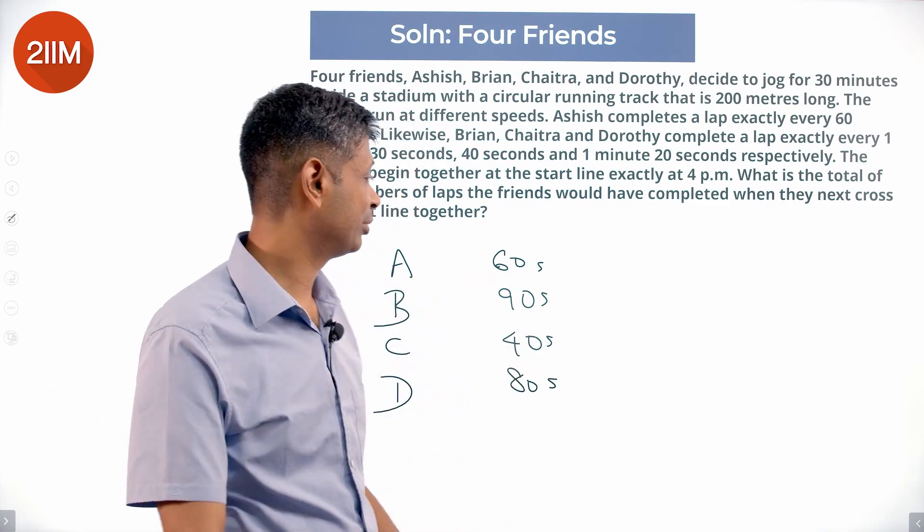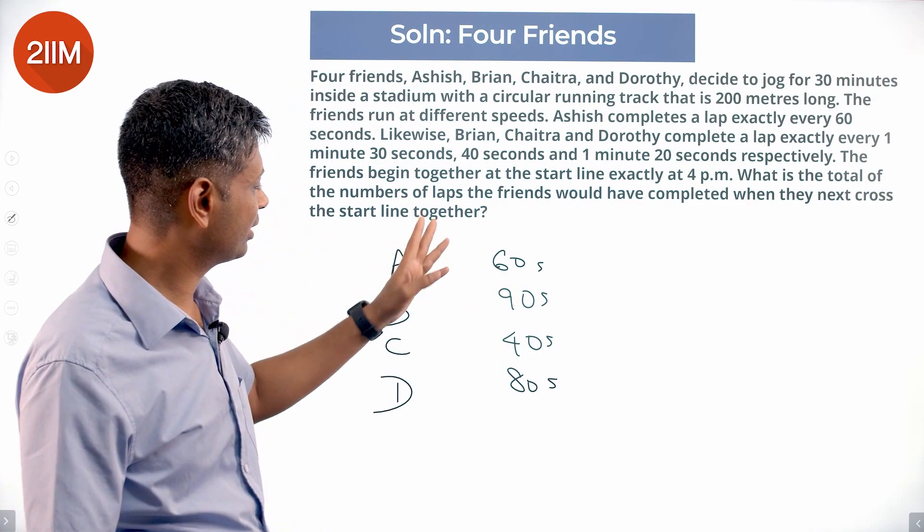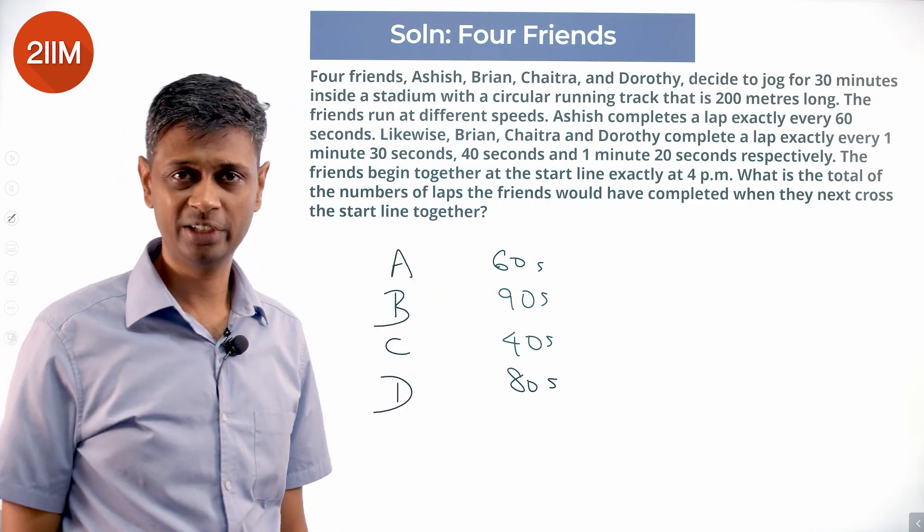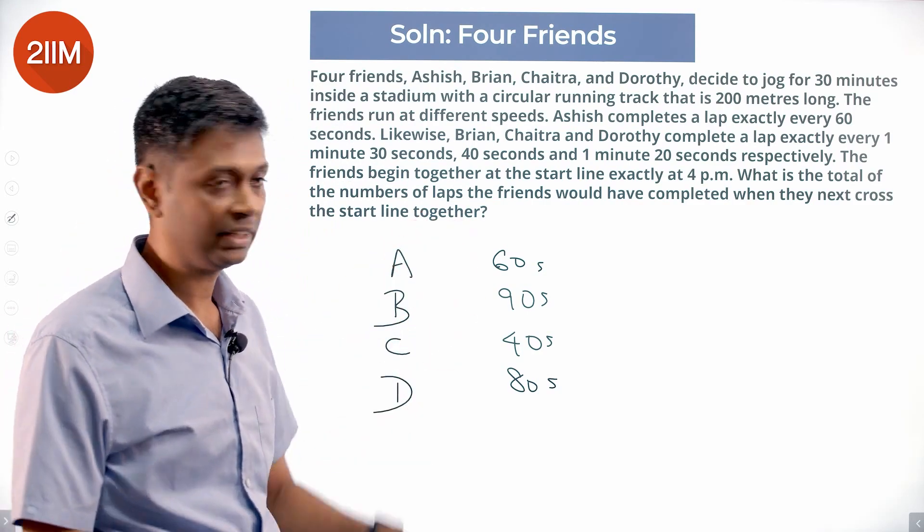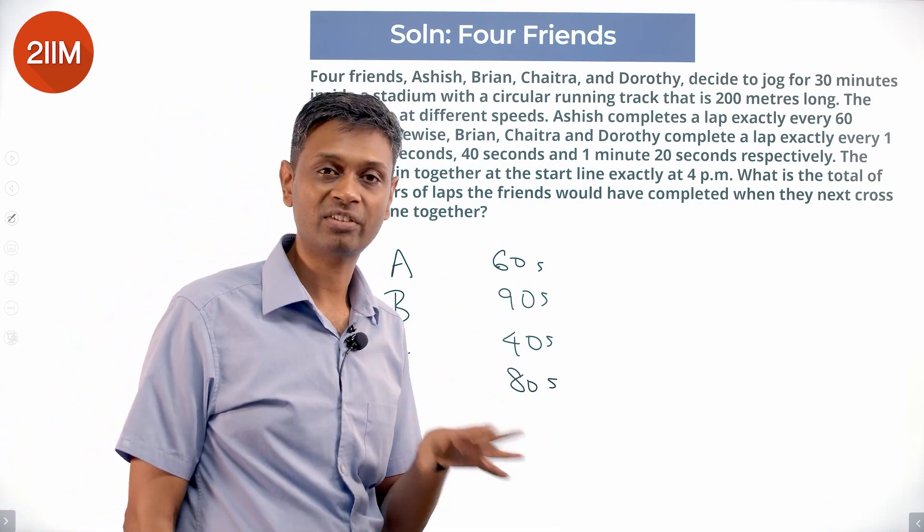When will they all be? LCM of this. LCM of 6, 9, 4 and 8, and then you add a 0 at the end. LCM of 6 and 9 is 18. 18 and 8 is 72.